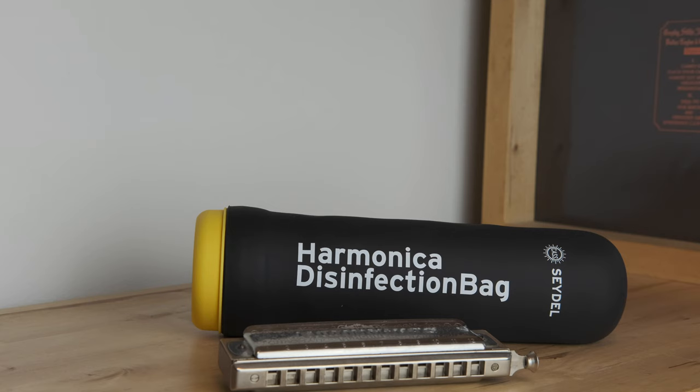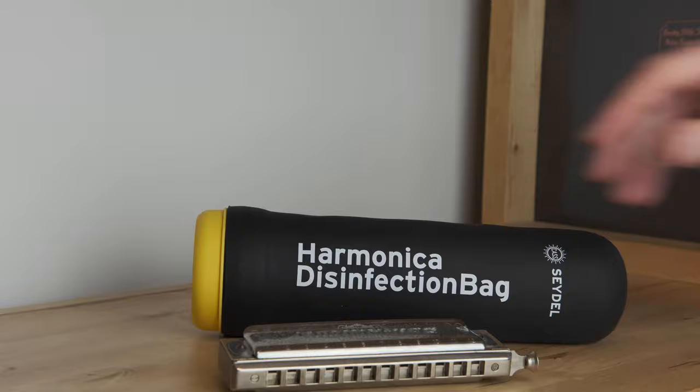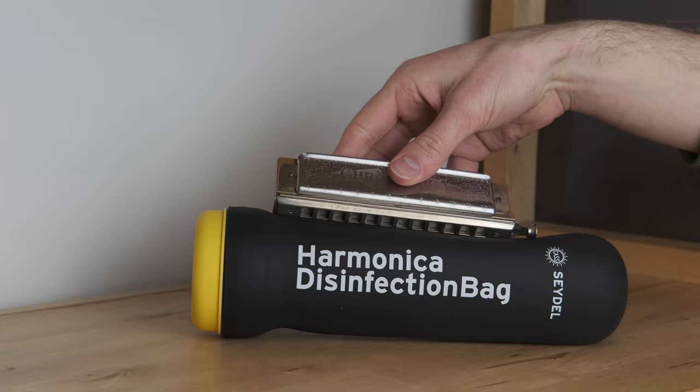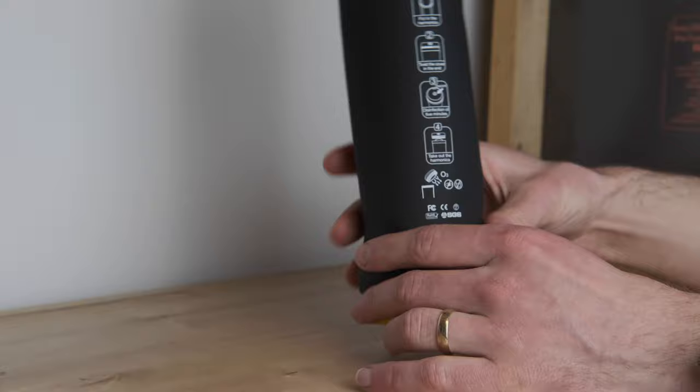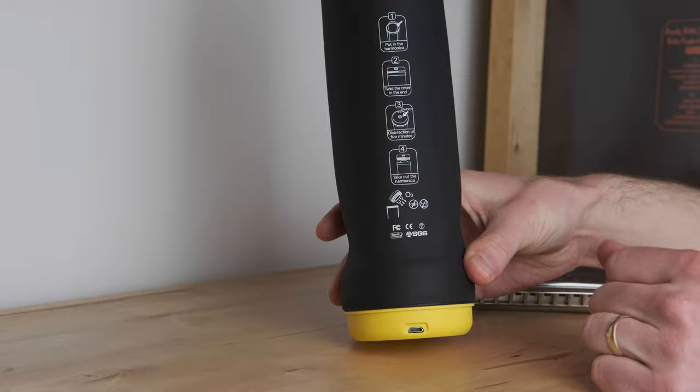Okay, so I've got a chromatic harmonica here. I thought I'd just show you this is a 12 hole but you can see it's pretty sizeable. So I imagine maybe a 14-16 hole might fit in there as well. So it's actually got instructions written on the bag itself. So essentially we're just going to put the harmonica in, turn it on and leave it. It's as simple as that.